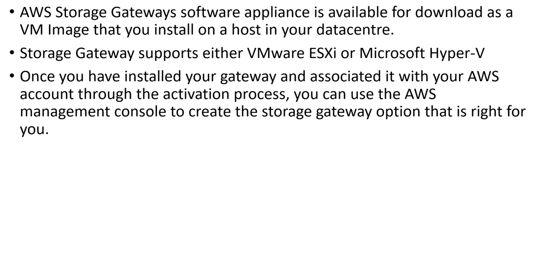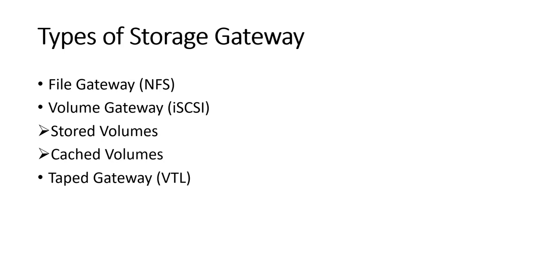AWS Storage Gateway software appliance is available for download as a VM image that you install on a host in your data center. It supports either VMware ESXi or Microsoft Hyper-V. Once installed and associated with your AWS account through the activation process, you can use the AWS Management Console to create the storage gateway option that is right for you. There are four types: file gateway, volume gateway, tape gateway, and volume gateway has two sub-types — stored volumes and cached volumes.